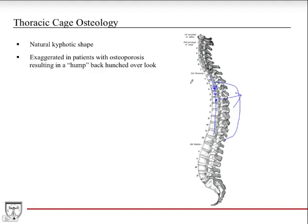Especially in older women who haven't had their osteoporosis properly managed, you'll see them hunched over a cane or walker with this humpback. That upper bump in the back is due to the thoracic vertebrae forming this exaggerated kyphotic shape.